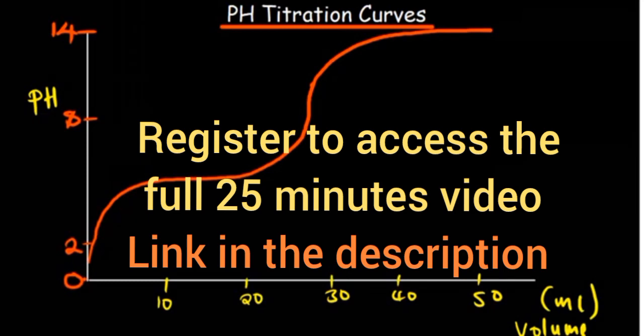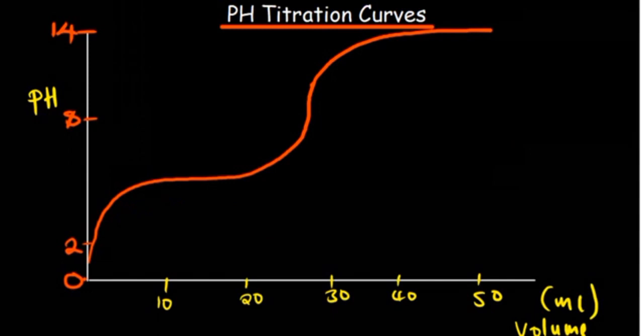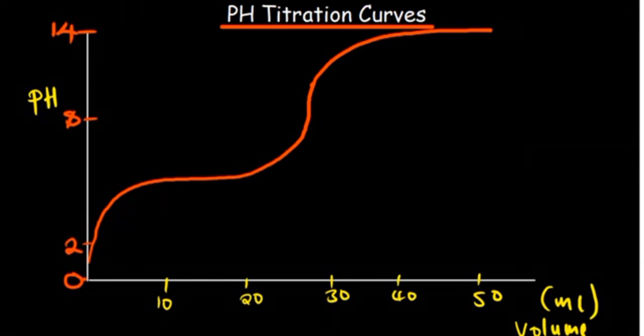So first of all, what is a titration curve? A titration curve is basically just a graphical representation of the pH of a solution during a titration. Titration is a reaction between an acid and a base, so we're trying to observe the changes to our pH as we either add an acid to a base or a base to an acid.